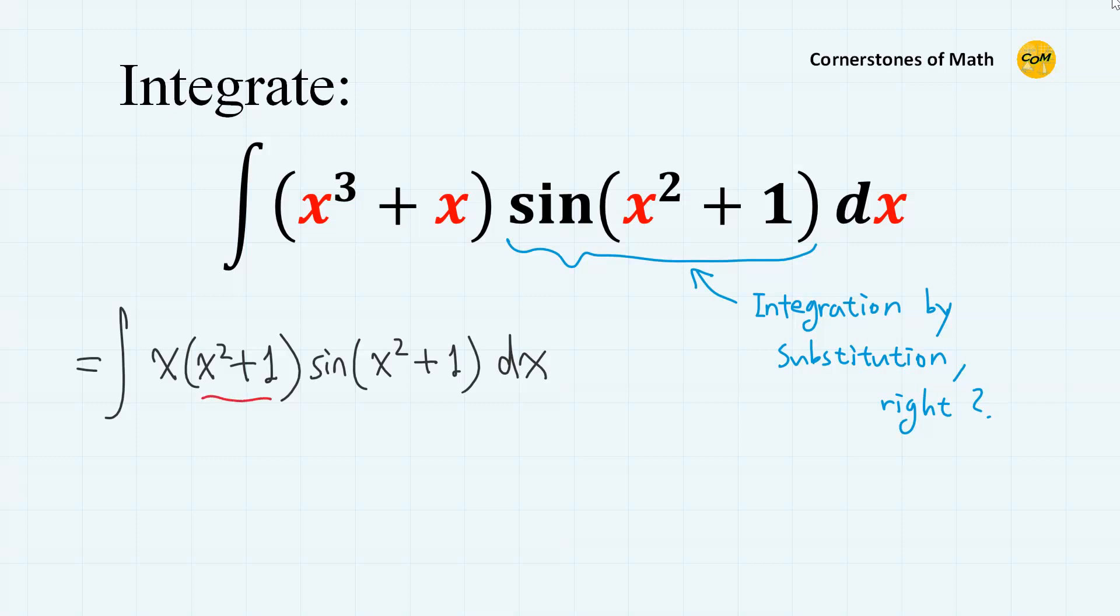So we have another x squared plus 1 here. Now the substitution. Let x squared plus 1 equals t. So this is t, and this is t. Then 2x dx equals dt. So x dx equals 1 half dt.